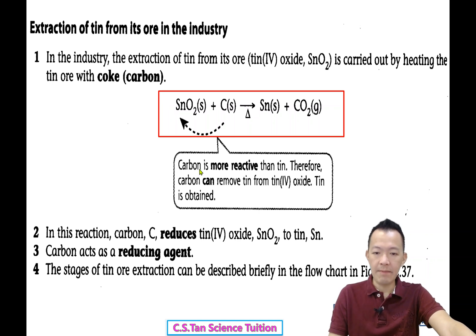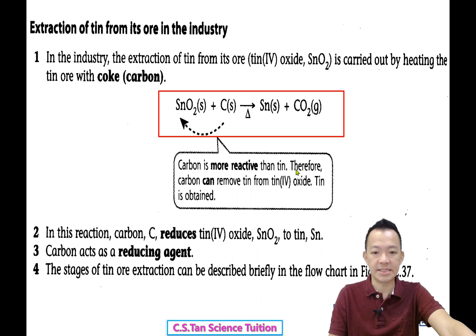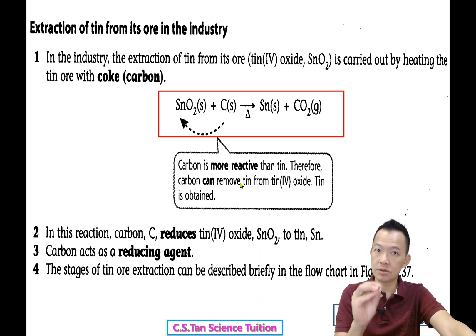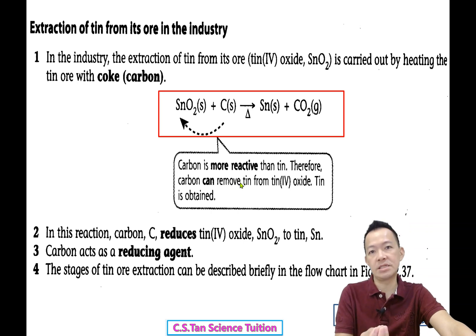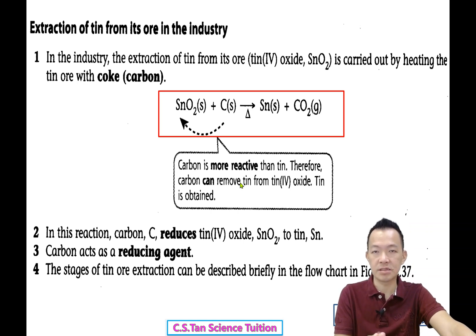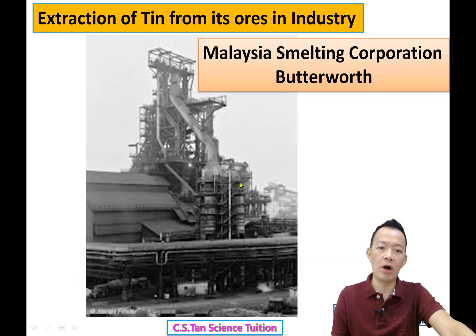Carbon is more reactive than tin, so therefore carbon can remove the oxygen from tin oxide. So tin is obtained. This is the method — until today they are still using this method, the simplest and fastest method to extract tin from its ore.